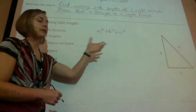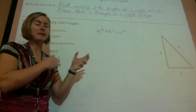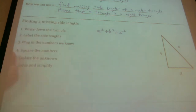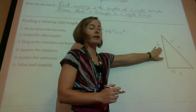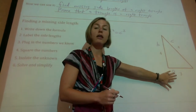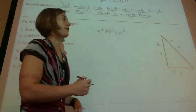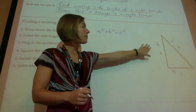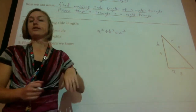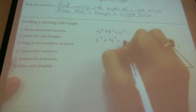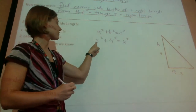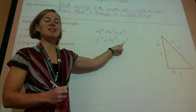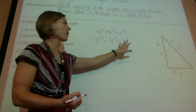A and B can be either one of the shorter sides — I like to call A the one that's normally the shortest length, but it really doesn't matter. All that matters is that C is the longest length. Step three: plug in the numbers we know. My A was 3, so we have 3 squared. B was 4, so it's 4 squared. And C we can leave as X, since that's the one unknown. Step four: square the numbers.